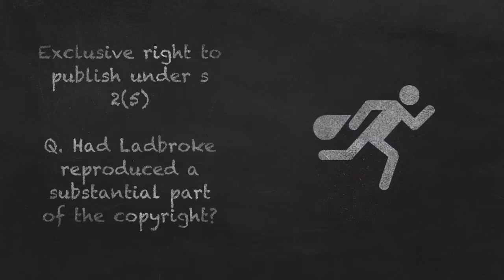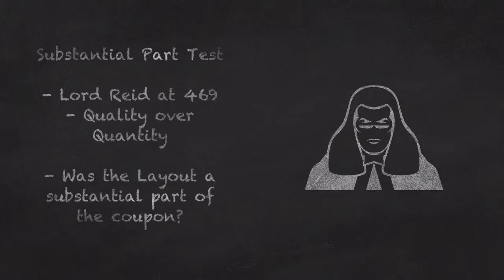The final issue came down to whether Ladbroke had reproduced a substantial part of the coupon. Lord Reid best described the test used by the House of Lords at paragraph 469, in which he states: 'Reproduction means copying. If he does copy, the question is whether he has copied a substantial part, and that depends much more on the quality than on the quantity of what he has taken.'